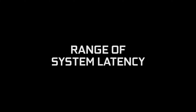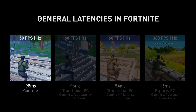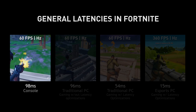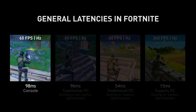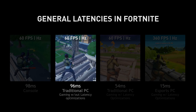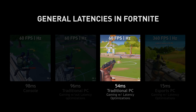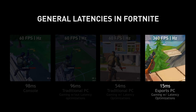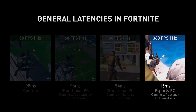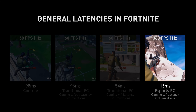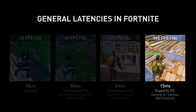Looking at some common gaming configurations — in this case with Fortnite — you can see there's quite a range of latencies. A game console playing Fortnite typically has a latency of around 100 milliseconds. An average PC is probably similar when running at 60 Hz. With some optimizations you can cut the latency about in half. And if you push the envelope with faster hardware, a faster display, and state-of-the-art software optimizations, you can drive latency on a PC with Fortnite to as low as 15 milliseconds.